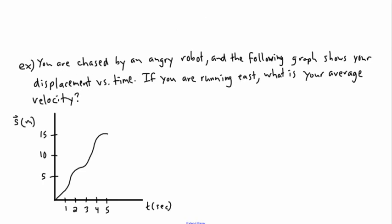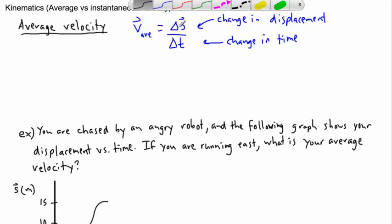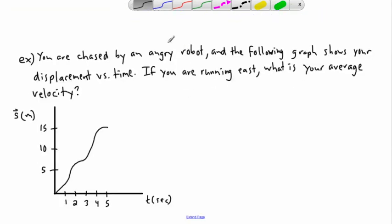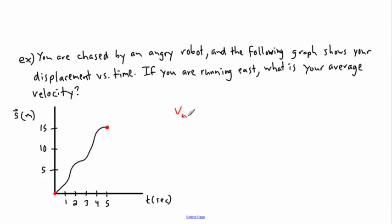For average velocity, all you have to do is look at the total displacement change over the total time. I start at time t = 0, and at time t = 5 seconds at the end. I don't care about the path — all I care about for v_average is the change in displacement, which in this case goes from 0 to 15 meters.